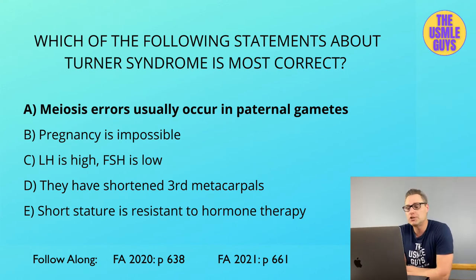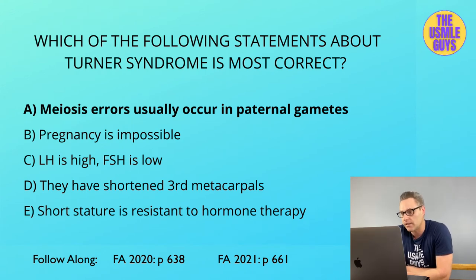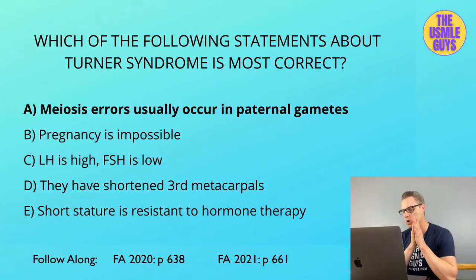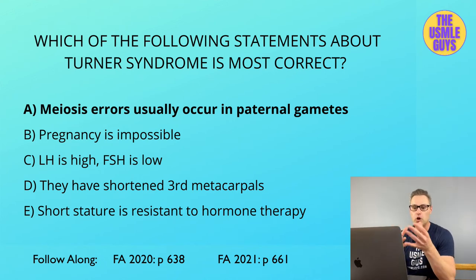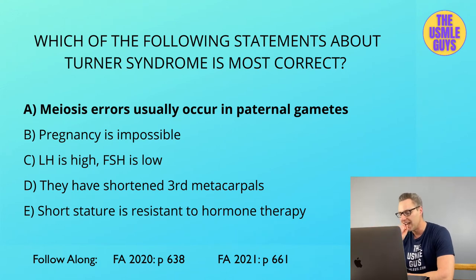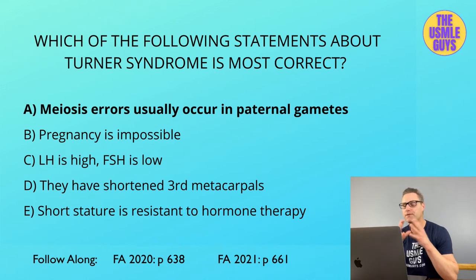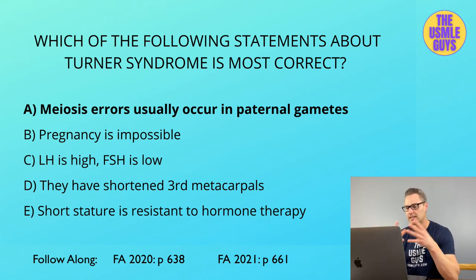An important gene associated with Turner syndrome is the SHOX gene, needed for skeletal development. The SHOX gene is located on each sex chromosome — both X and Y — so each female and male normally has two functional SHOX genes per cell. In Turner syndrome, without the second X chromosome, they're missing a full copy of the SHOX gene in every cell, which is why skeletal development is affected.